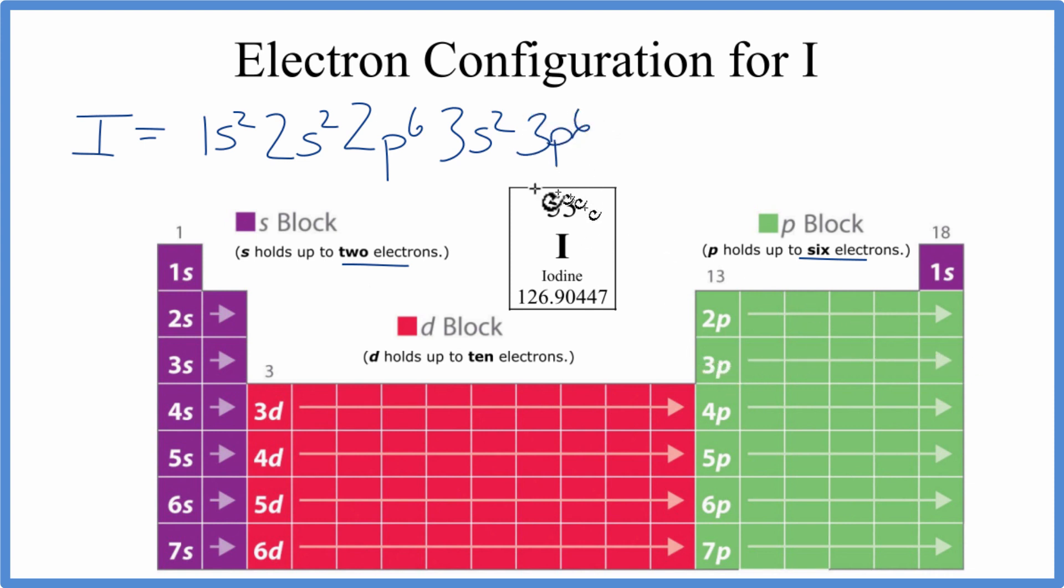Remember, we've got to get 53 electrons here. From 3p, we go to 4s2. And then 3d, and d, they can hold up to 10. So let's do a 3d10 here.